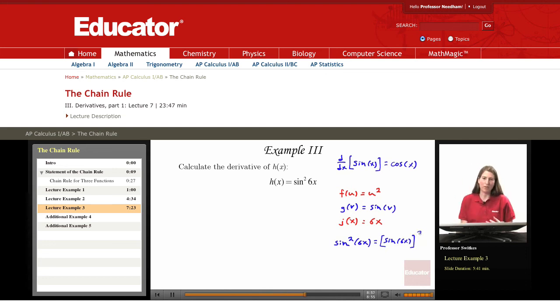And so the outer structure really is a 'something squared' structure. The middle function is sin(v), and the innermost function is j(x) = 6x. And so we'll need the derivatives of f and g and j. So let's look at those.